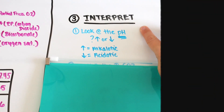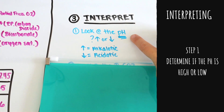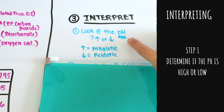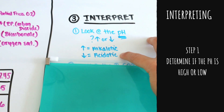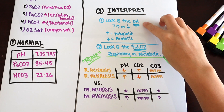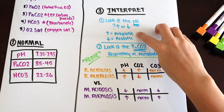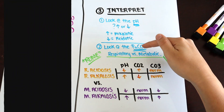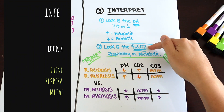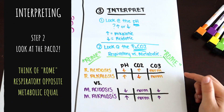Now let's get into interpreting ABGs. Your first step is to look at the pH level — is it high or is it low? If it's high, it's alkalotic. If it's lower than normal, the acidity is higher so it's acidotic. Once you've determined alkalotic or acidotic, you then look at your PaCO2.